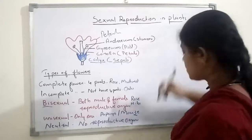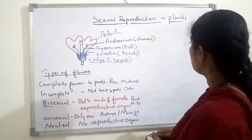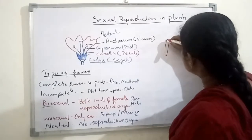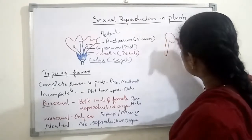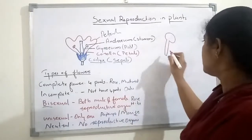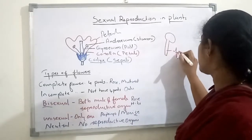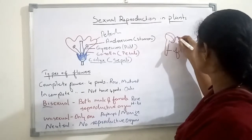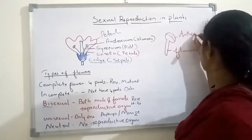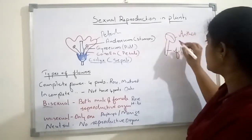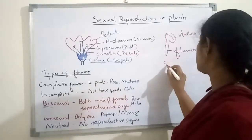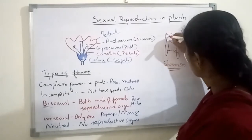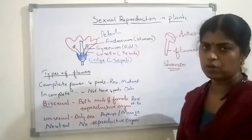Stamens — a single stamen has this kind of structure. A tube-like portion will be there. At the tip of the tube-like portion, one bulb-like portion will be there. This tube-like portion is known as the filament, and this bulb-like portion is known as the anther. All the anthers and filaments together are known as stamens. Within the anther, the pollen grains are produced.